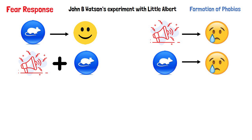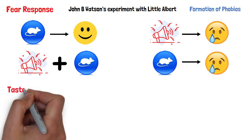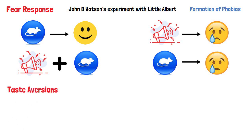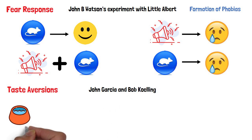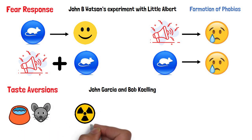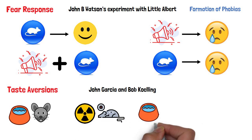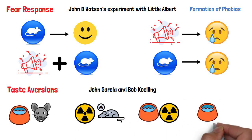Even a single instance may be enough. Taste aversions. Another example of classical conditioning is the development of conditioned taste aversions. Researchers John Garcia and Bob Coling first noticed this phenomenon when they observed how rats that had been exposed to nausea-causing radiation developed an aversion to flavored water after they were paired together.